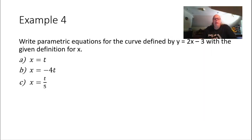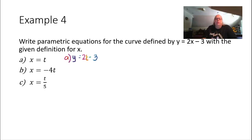Example 4: write parametric equations for the curve defined by y equals 2x minus 3 with the given definition for x. We have one half of our parametric equations — the parameter is t and we know what x is. We just have to find y. Since we have x, we plug in what x equals. For part A, x equals t, so y equals 2 times t minus 3, giving y equals 2t minus 3. The parametric equations are x equals t and y equals 2t minus 3.